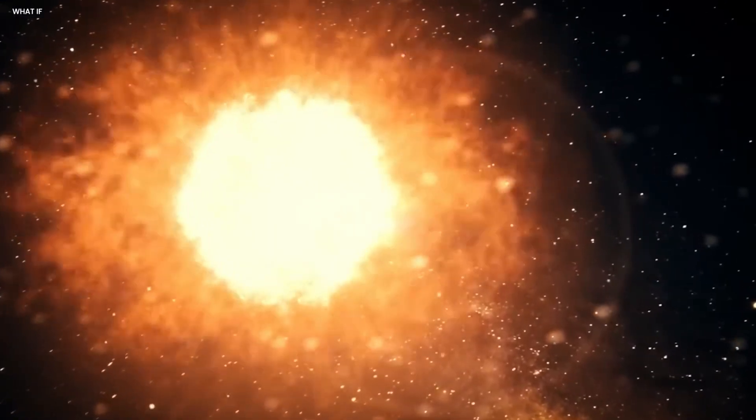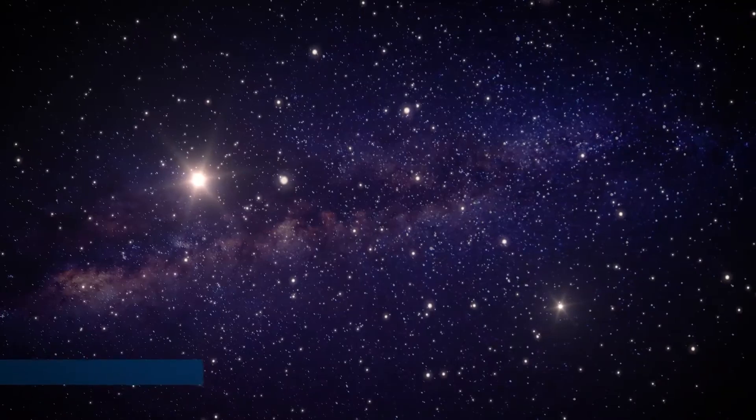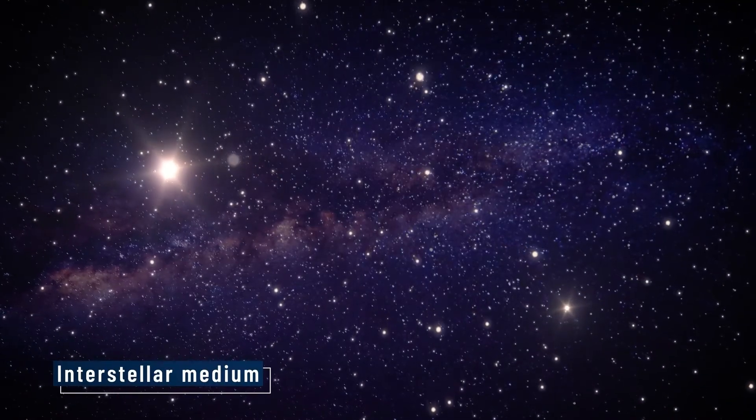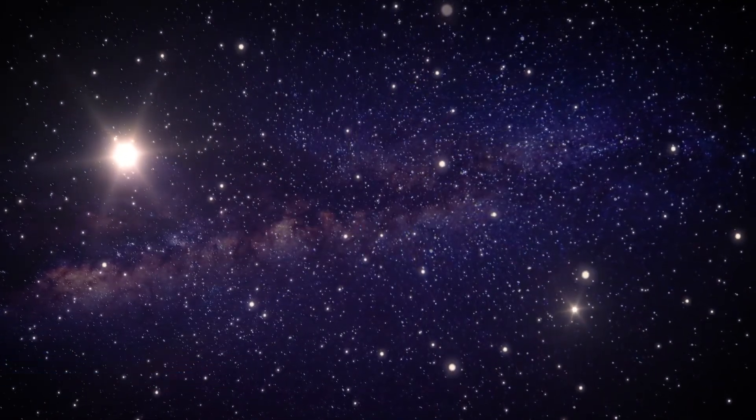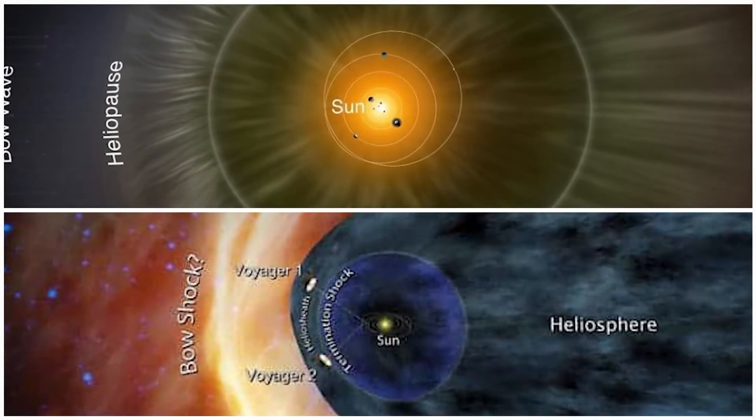The heliosphere is the protective bubble of solar wind encompassing our entire solar system, and beyond it lies the interstellar medium, the matter that fills the space between stars. This boundary, the heliopause, is exhibiting peculiar ripples and forming odd angles.